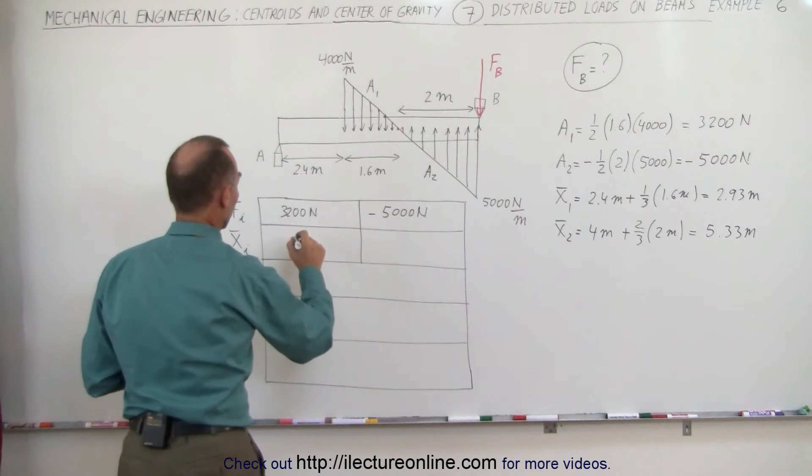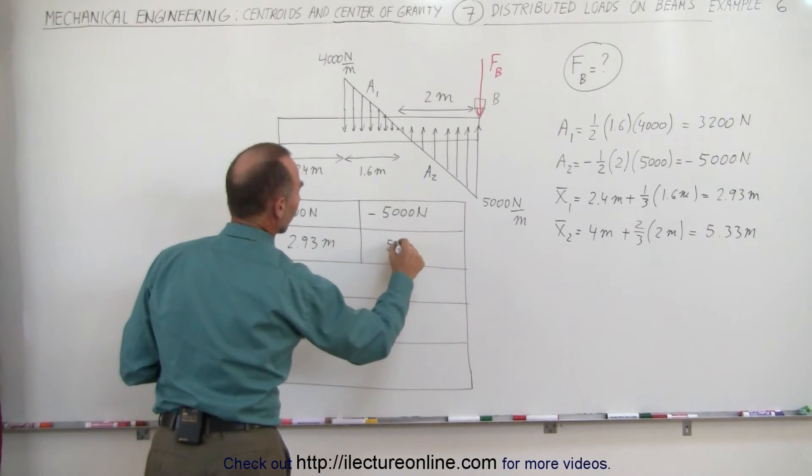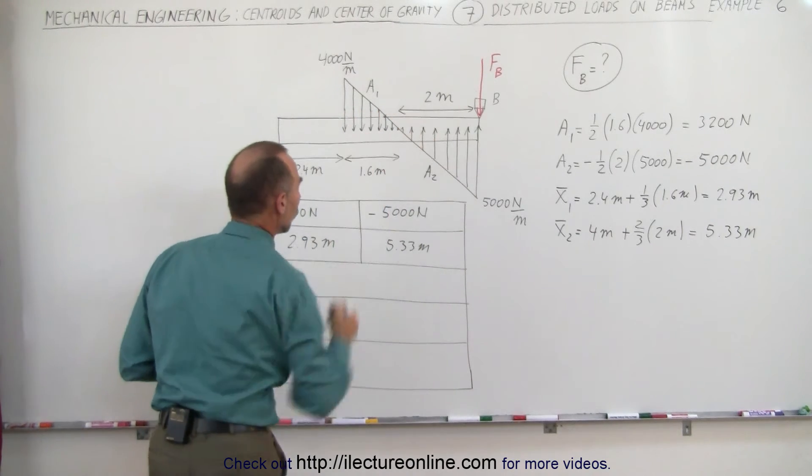That goes in here: 2.93 meters and 5.33 meters. That is relative to point A. Those are the centroids of the two load segments.